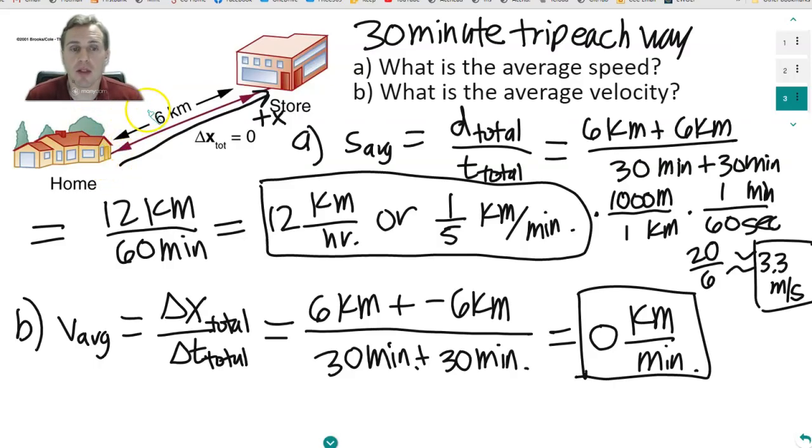Another way to think about this is that all the positive displacement and the negative displacement add together and cancel out. So here's an interesting thing. You can have a non-zero speed, but a zero velocity. So this is kind of interesting that velocity and speed are not the same thing.